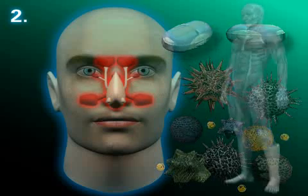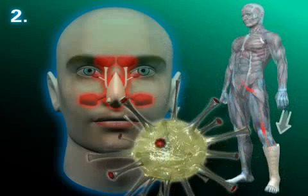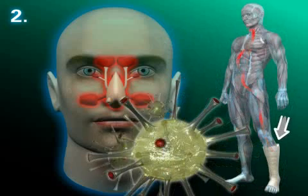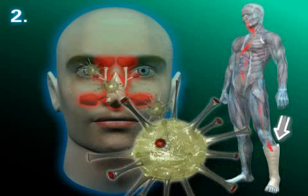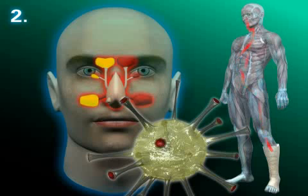Even fairly abstract causes exist. A bacterial blood infection after an accident can lead to bacteria distribution through the bloodstream into the paranasal mucosa. This is also called a hematogenic sinusitis.